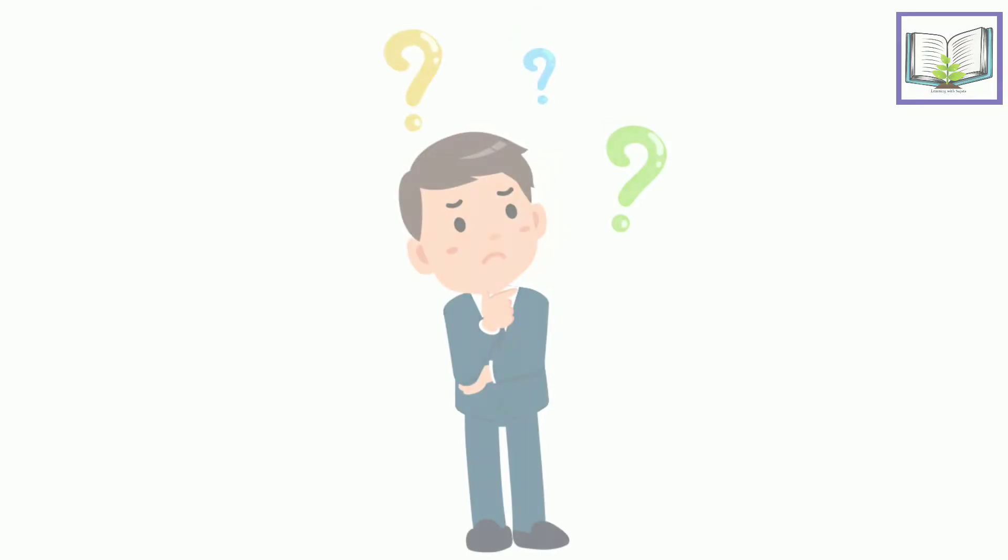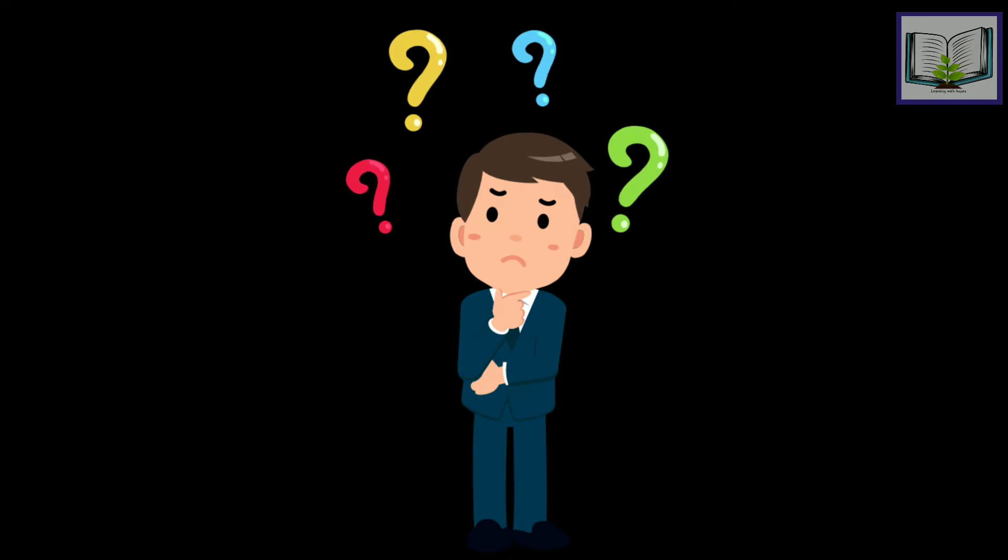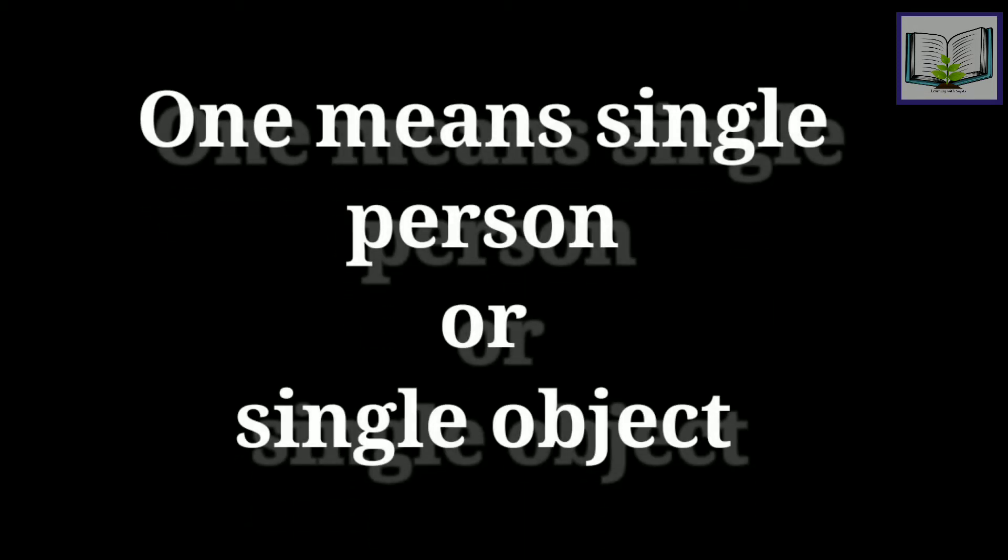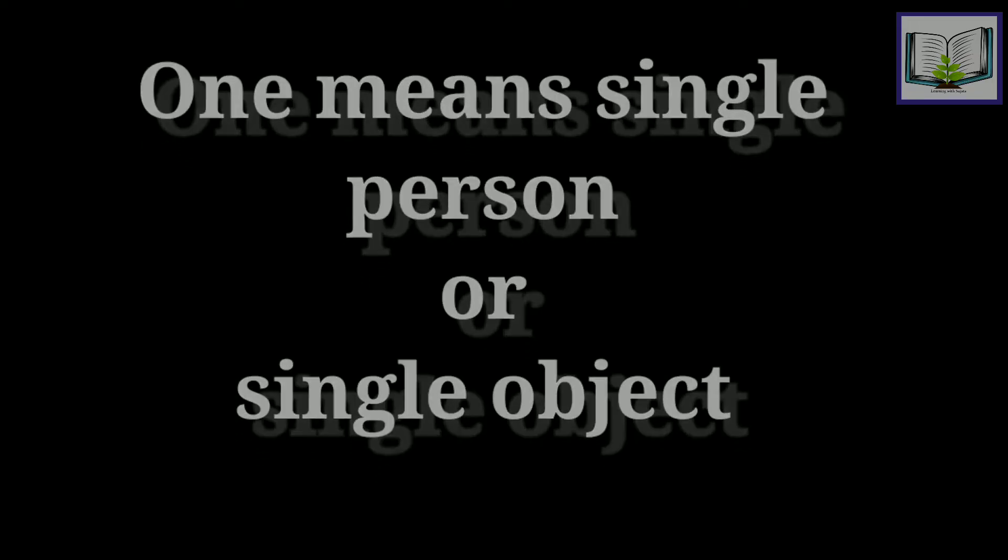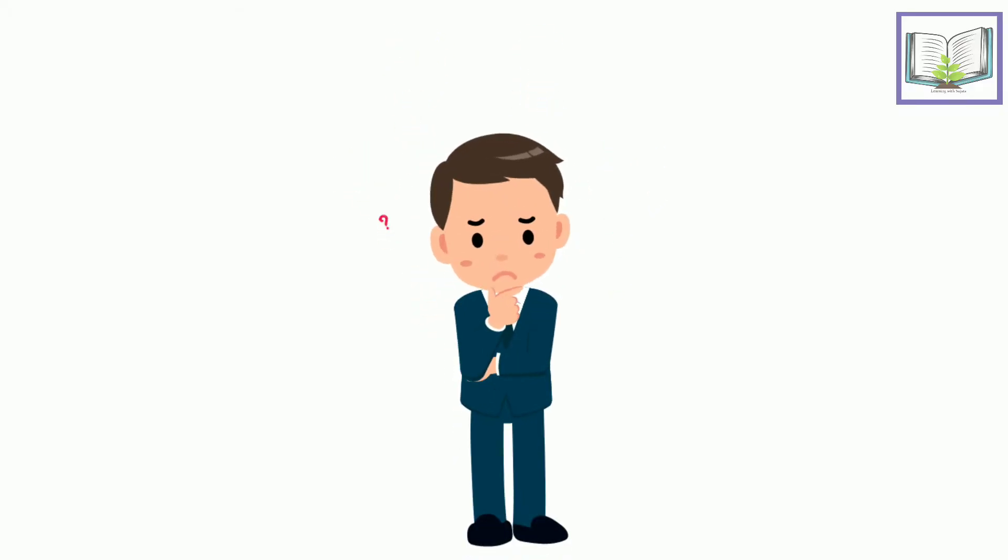So, did you hear about 'one'? How do we spell 'one'? It is O-N-E, one. One means single person or single object. So what about many? Can we spell many?